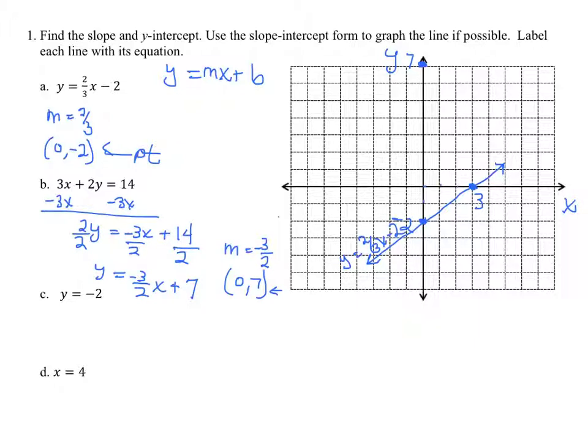And I'm going to go down 3, right 2. I could do that again. And then I'm just going to make the line. There we go. And so this is the line 3x plus 2y equals 14.